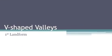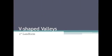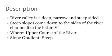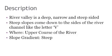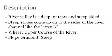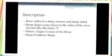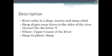Description: A river valley is a deep, narrow, and steep-sided feature. Steep slopes come down to the sides of the river channel, like the letter V. Where? Upper course of the river. Slope gradient? Steep.